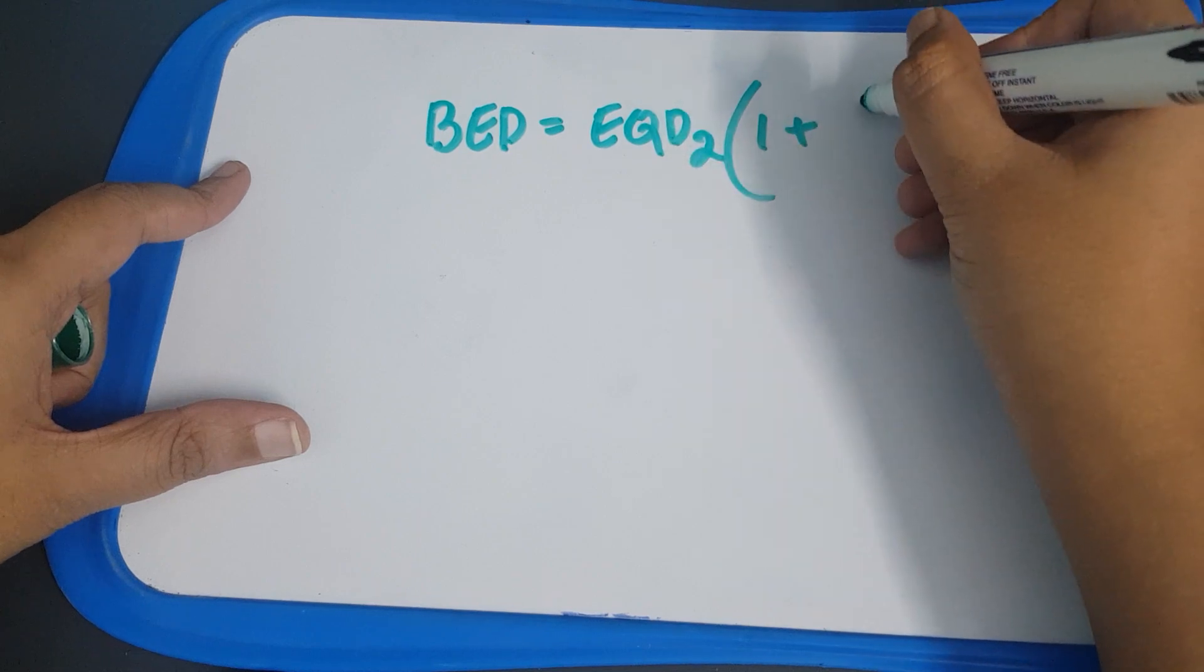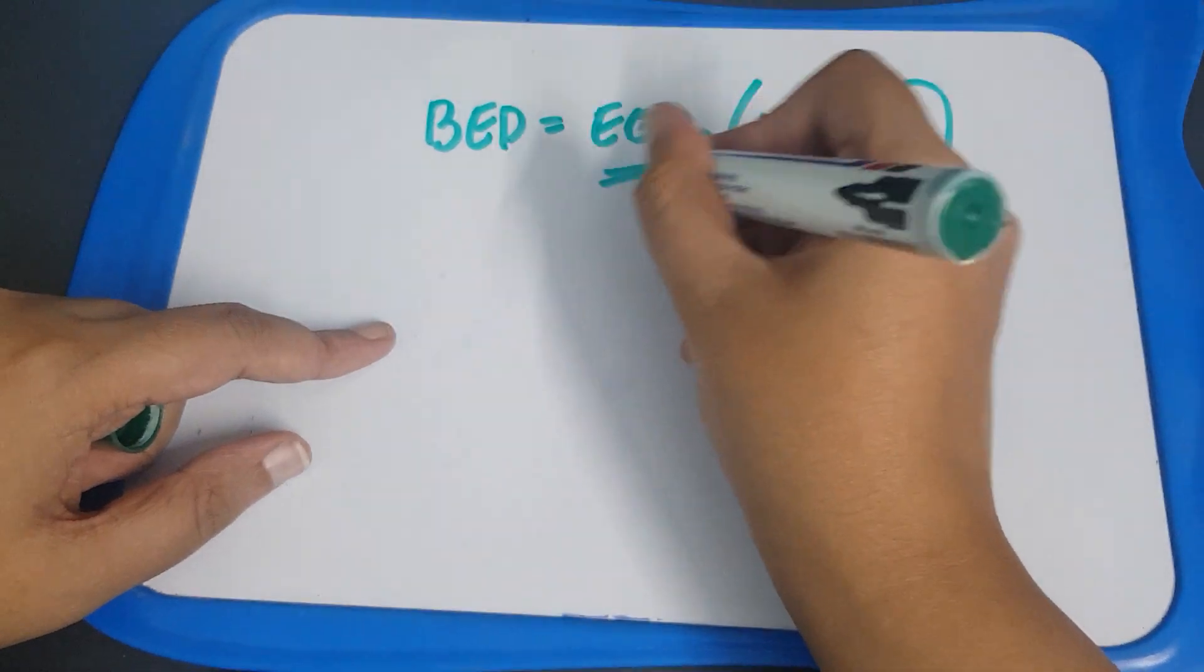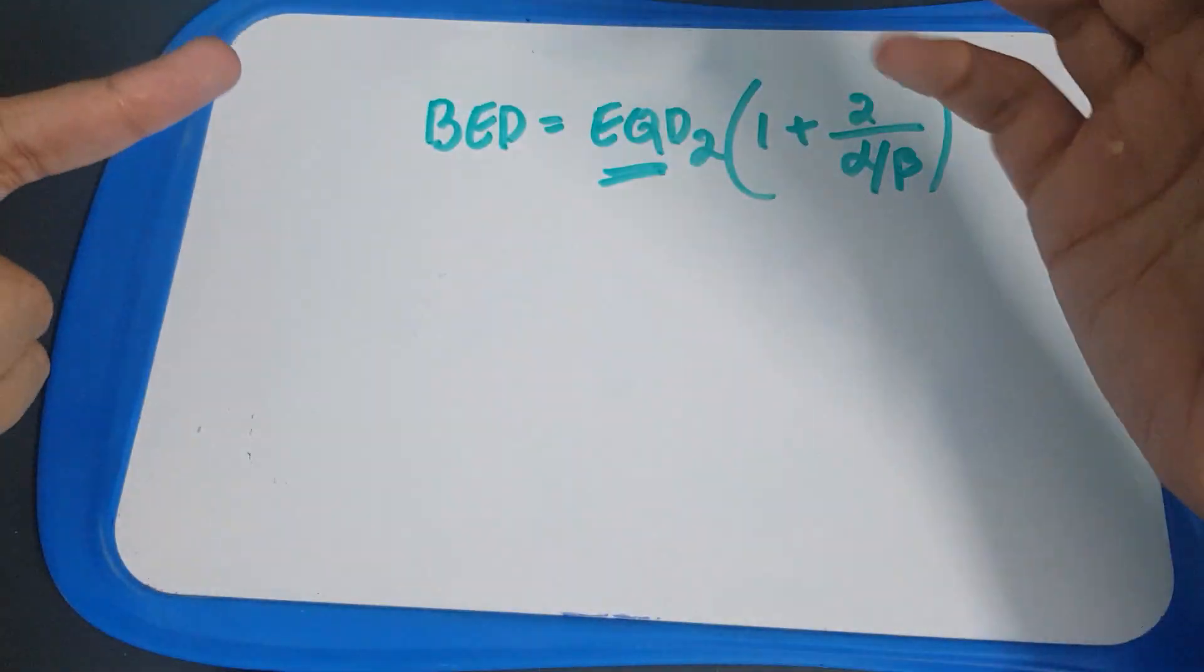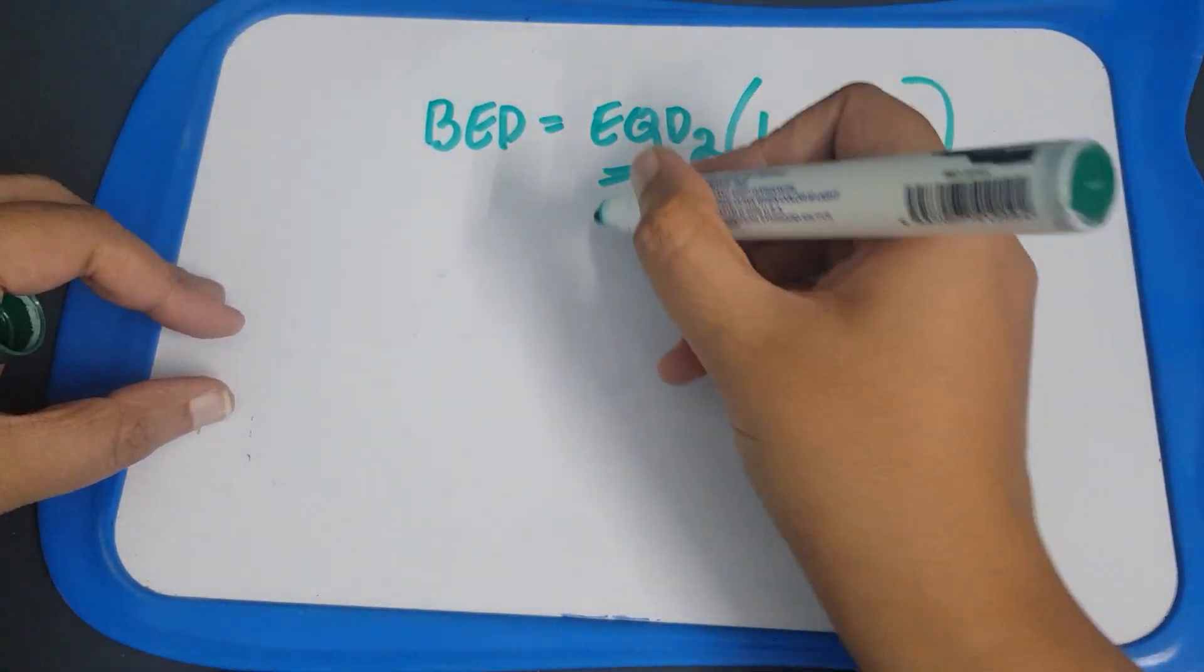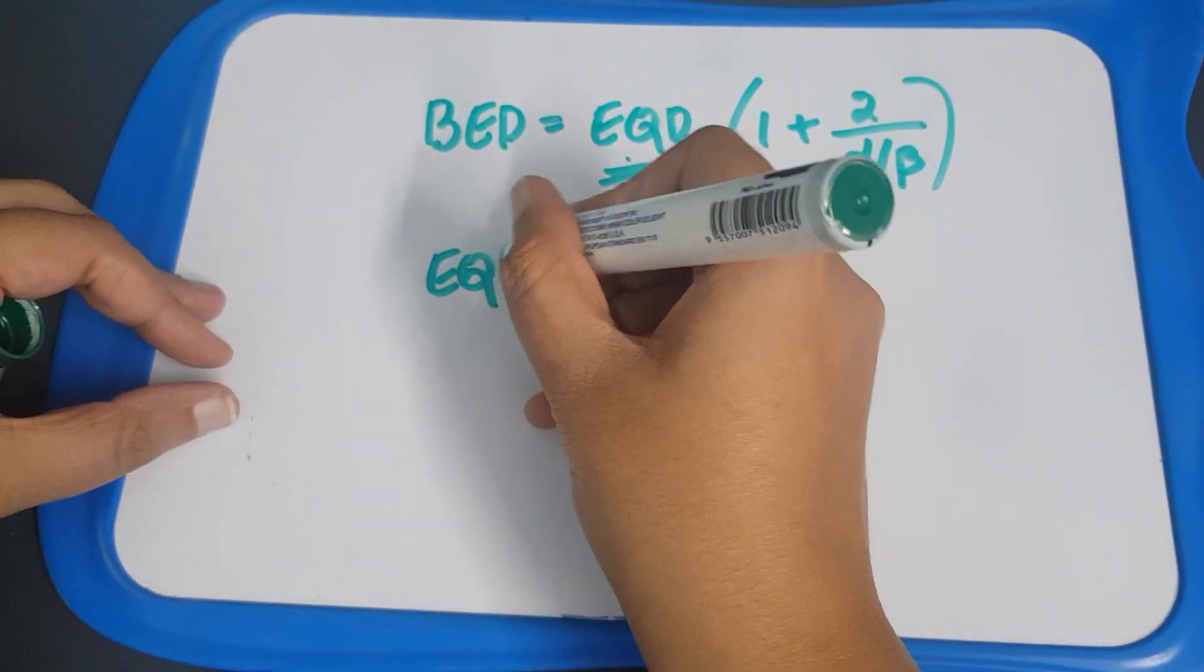If you put the dose per fraction as 2 gray per fraction, then you can derive what is the equivalent dose if you give 2 gray per fraction. If you keep it here and bring this down, if you just rearrange it.